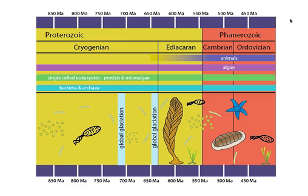Let's leave the Cambrian aside for just a minute and move a little bit further back in time to discuss what this timeline can tell us about what was going on in the world's oceans at the end of the Proterozoic. As you can see here, the end of the Proterozoic is broken up into two smaller time divisions, the Cryogenian and the Ediacaran.